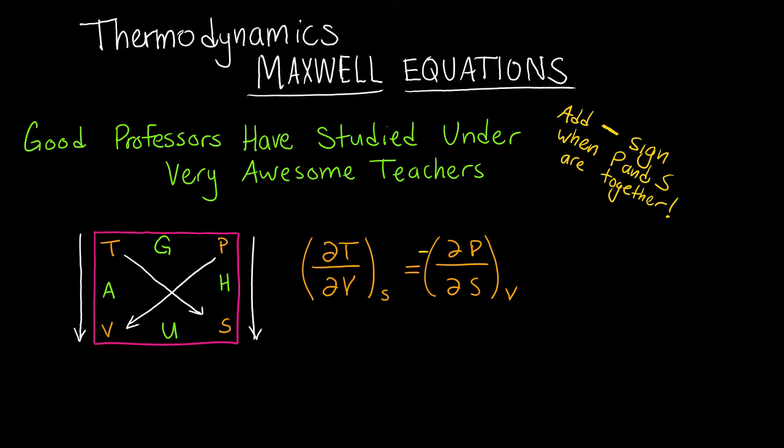The natural variables for internal energy would be V and S, which means that these are the Maxwell equations for U, internal energy. Occasionally, some books use E.